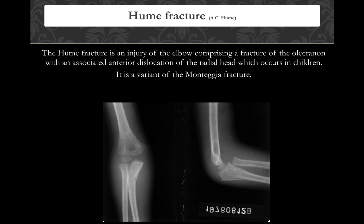Hume described an injury in children where there was a fracture of the olecranon along with a dislocation of the radial head — essentially a fracture of the proximal ulna in the olecranon area with radial head dislocation. This is common in children and is called a variant of Monteggia. It is similar but not identical.